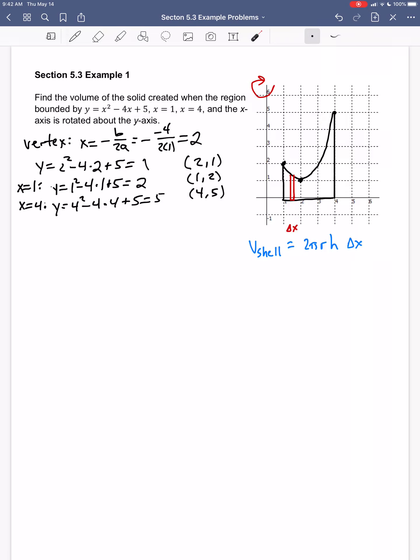So how do I find r? How do I find h? r is the distance from the rectangle to the axis of rotation. What's important to realize is that this rectangle is tracked by the variable x. I'm going to integrate between x equals 1 and x equals 4. As I'm doing that, these representative rectangles are marching across this region.